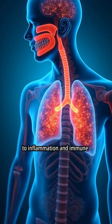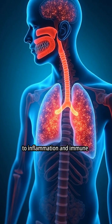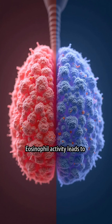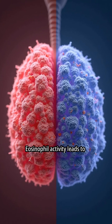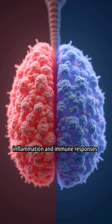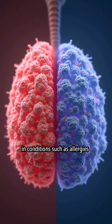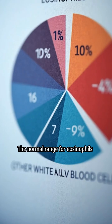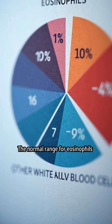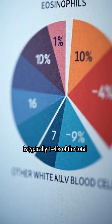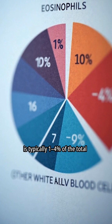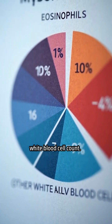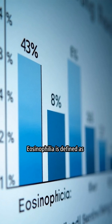Eosinophils contribute to inflammation and immune responses. Eosinophil activity leads to inflammation and immune responses in conditions such as allergies and asthma. The normal range for eosinophils is typically 1 to 4 percent of the total white blood cell count.